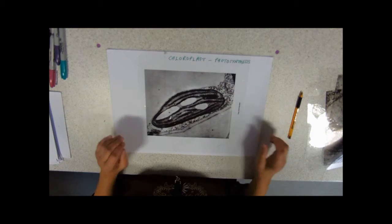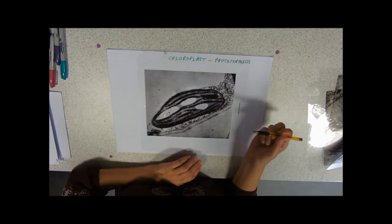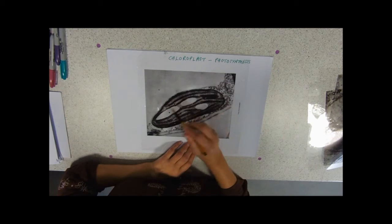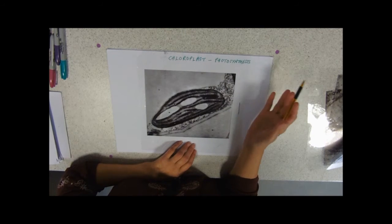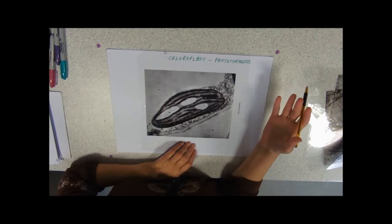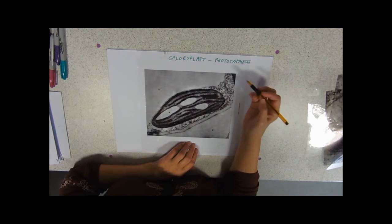So this is our electron micrograph of a chloroplast. And again, now this, obviously chloroplasts are a feature of plant cells only. Mitochondria, you find them in all cells, nuclei, you find them in all cells.